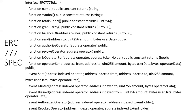Here's a look at the ERC-777 contract interface specification. It has normal functions like total supply and balance on an address, sending, and then all the operator functions like authorizing an operator, revoking an operator, specifying what an address is an operator for, and sending by the operator. There are also various events for minting, burning, authorizing operators, and revoking operators.